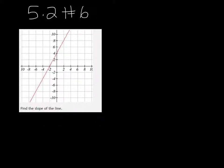In this problem you're asked to find the slope of the line. There's a couple different ways you can do this, but for either way you want to make sure you pick two points that are right on the grid.